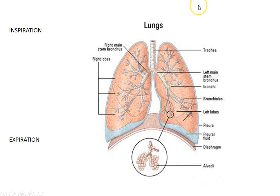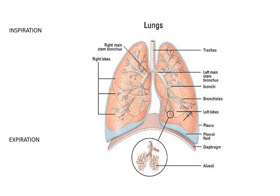So we have atmospheric pressure outside the body, intrapulmonary pressure inside the lungs, and intrapleural pressure within the pleural cavity. We're going to talk about how we change volumes to change pressure and how that gets air to move — very subtle, small changes in pressure that let air go in and out.